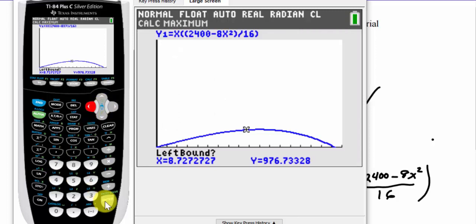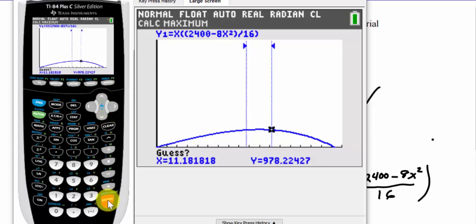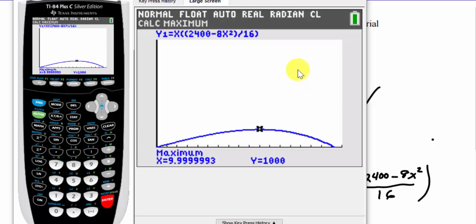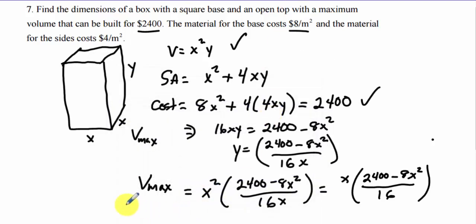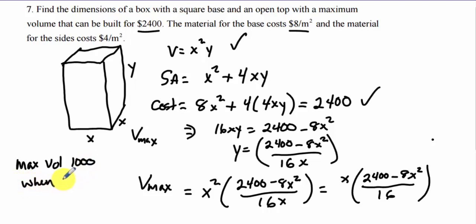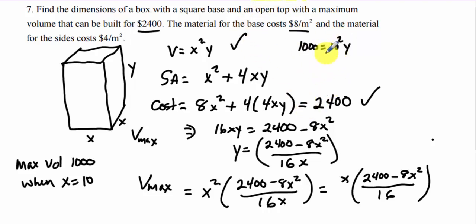The calculator gives a maximum volume of approximately 1000 cubic meters when x = 10 meters. Now plugging x = 10 back into the volume equation V = x²y = 1000, we get 100y = 1000, so y = 10. The box is actually a cube: 10 meters × 10 meters × 10 meters.